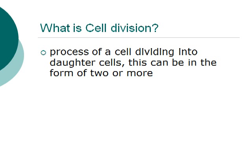So, first of all, what is cell division? Cell division is the process of a cell dividing into daughter cells, which can be in the form of two or more.